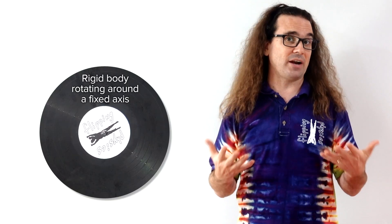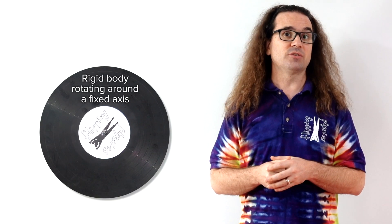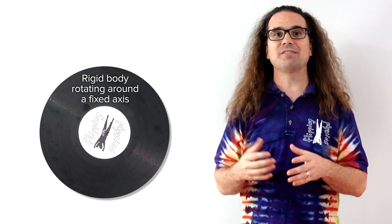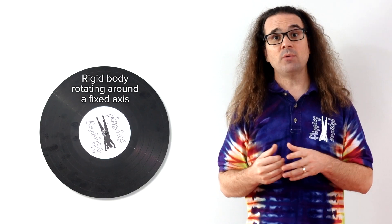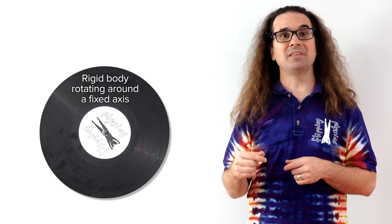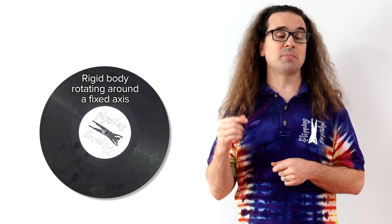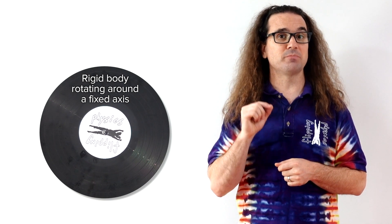Good morning. Let's say we have a rigid object or a rigid body like this record, which is rotating about a fixed axis. Today we are going to derive the angular momentum of this rigid body.